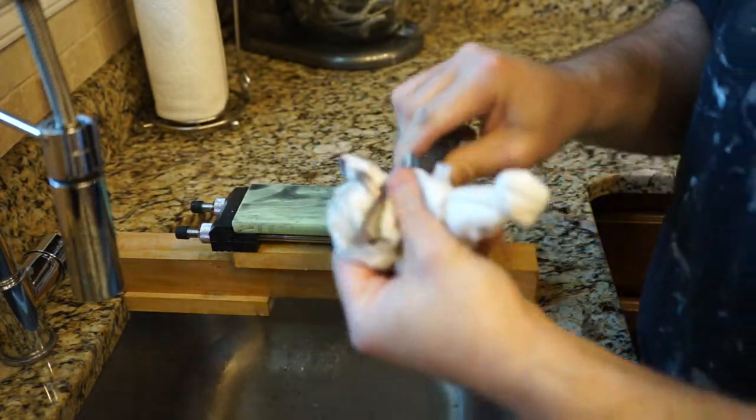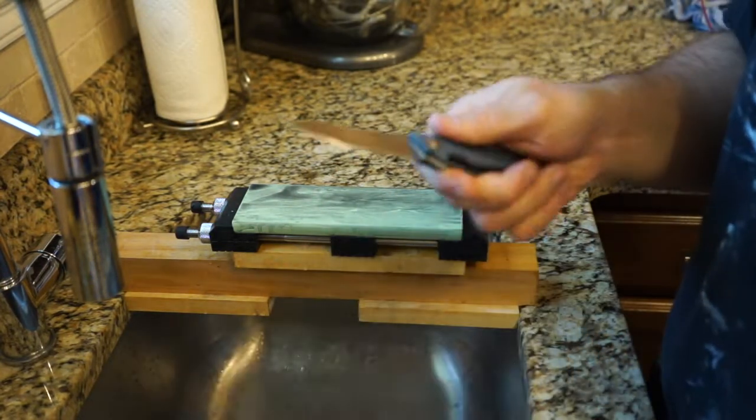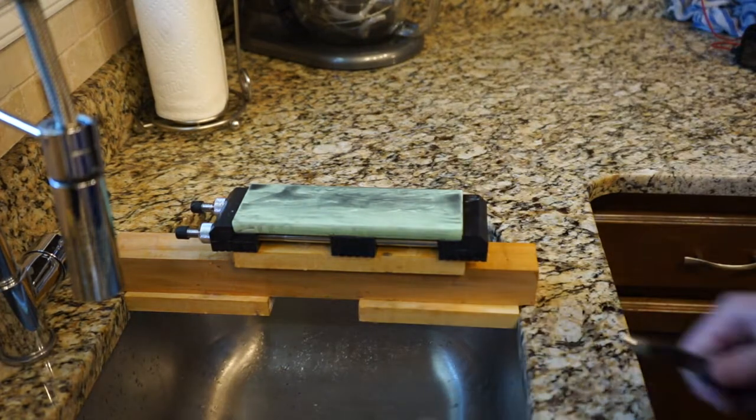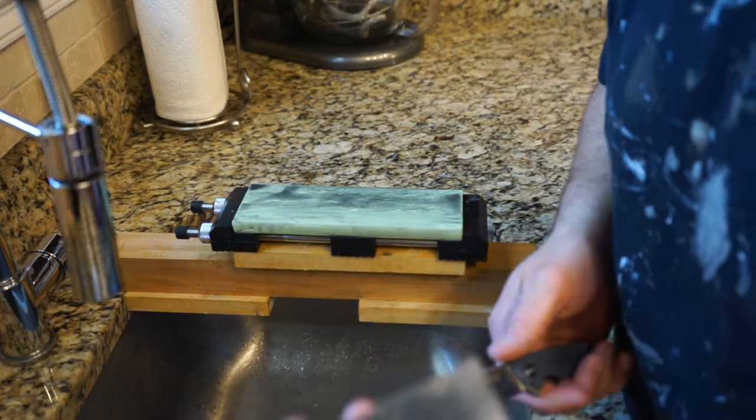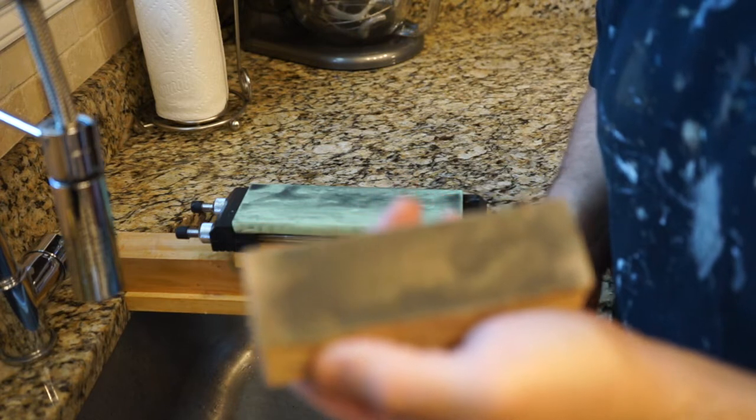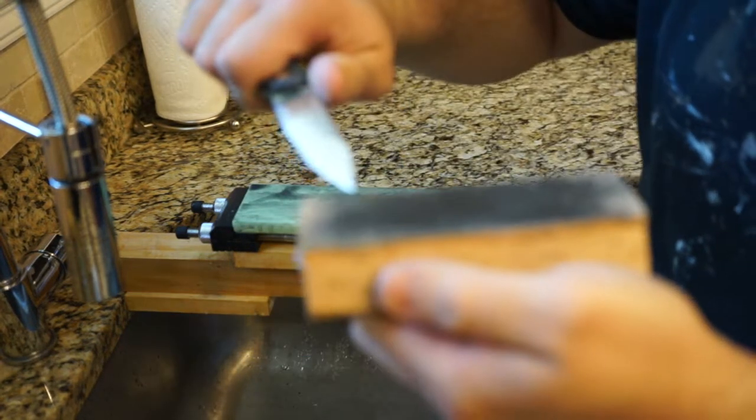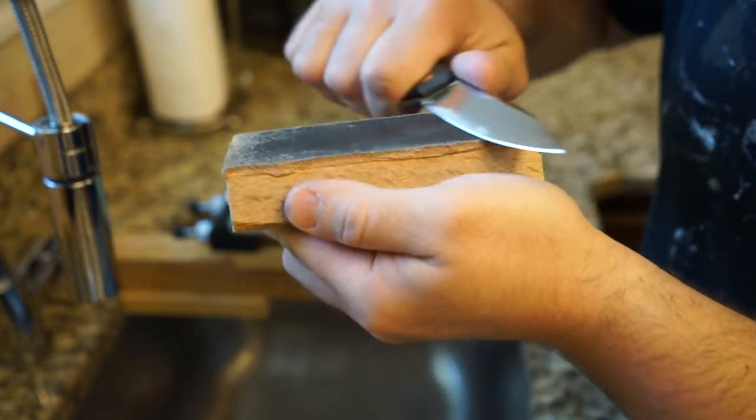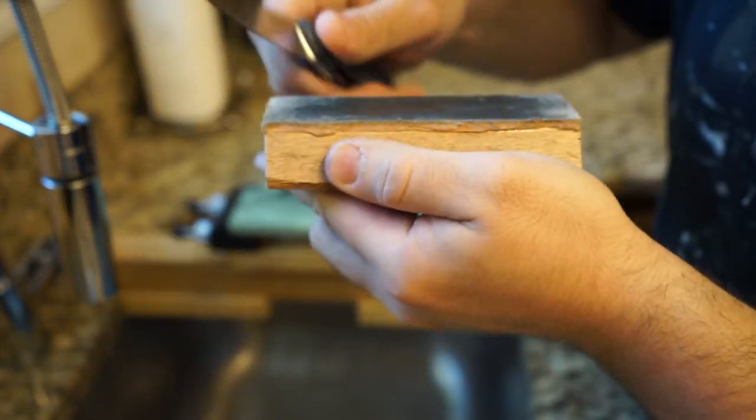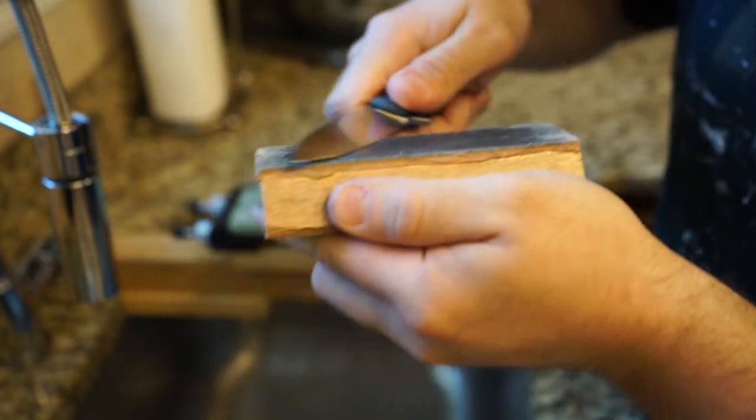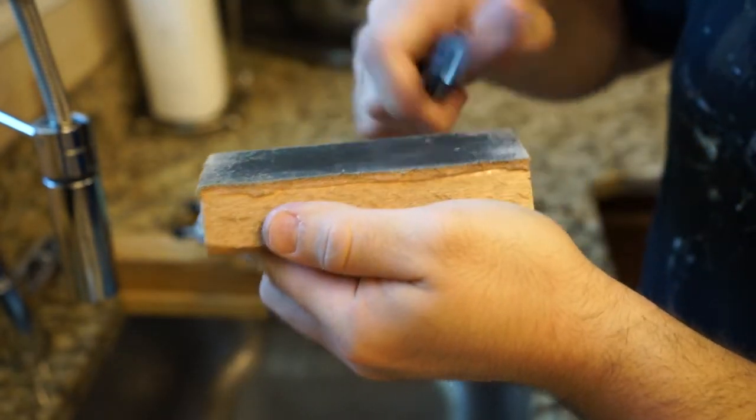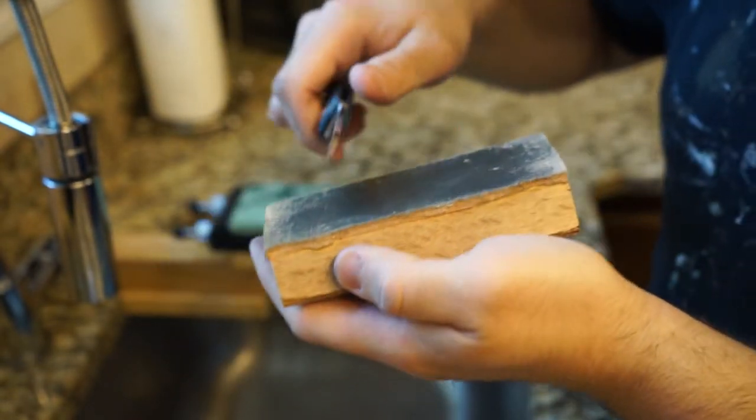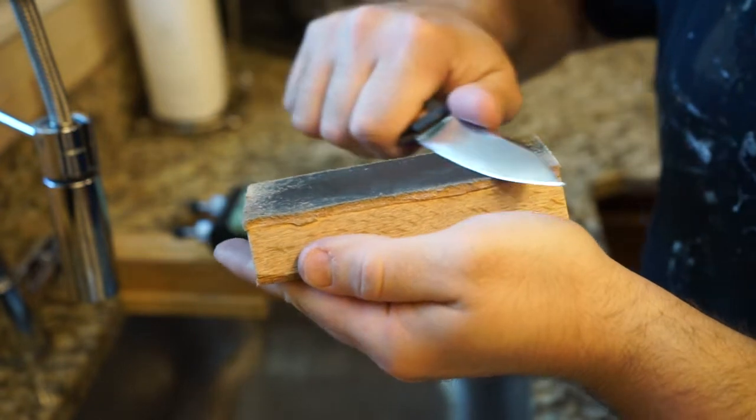Alright so there we're just deburring. Alright now grab a strop quick and I'll just use your basic green chromium oxide strop. Try and keep it simple for you guys so you know guys who are newer at this who don't have the fancy diamond sprays and kangaroo leather and all that kind of stuff. I just want to try to make it as easy as I can for newcomers.